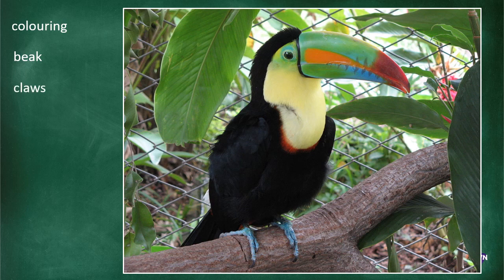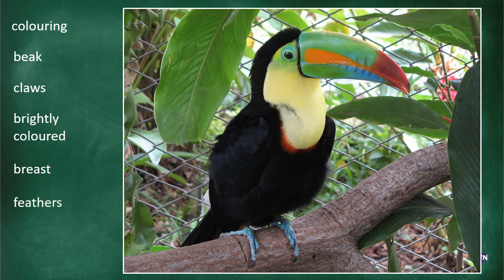Look at its claws — those nails look quite sharp. How would you describe its claws? They're an interesting color. Would you say this bird is brightly colored, or would you say it's black with some beautiful colors on it? Look at its breast — it's got a yellow breast, pale yellow with a bit of red around it, very attractive. Its feathers look interesting — do you think it's got color under its feathers as well, or do you think it's black everywhere?